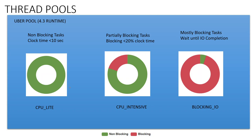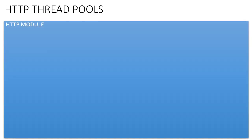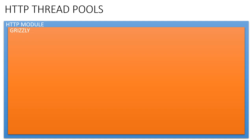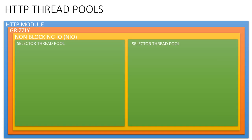Apart from the three main thread pools, there are also two other thread pools dedicated to the HTTP module. The Mule 4 HTTP module uses Grizzly under the covers. Grizzly needs selector thread pools, and Java NIO (non-blocking I/O) has the concept of selector thread pools. These selector thread pools check the state of NIO channels and create dispatch events when they arrive. The selector thread pools are divided into two parts: one for the HTTP listener and one for the HTTP requester.